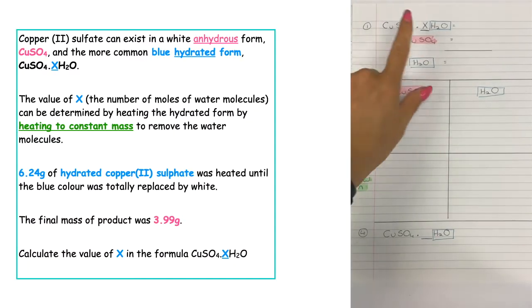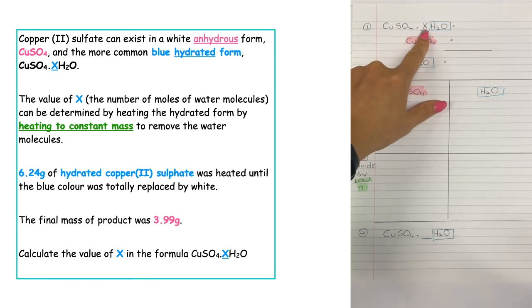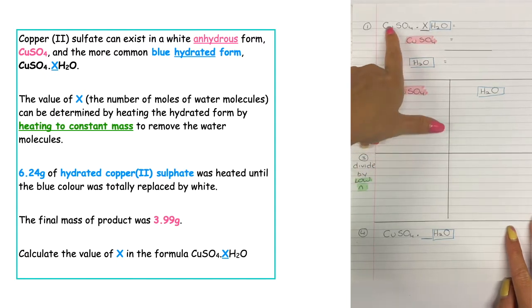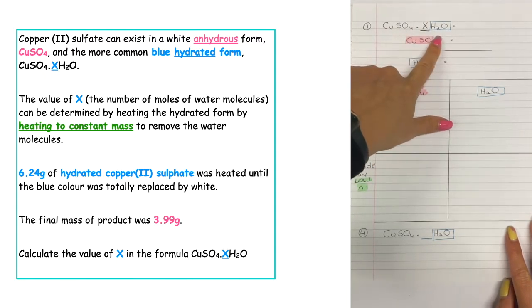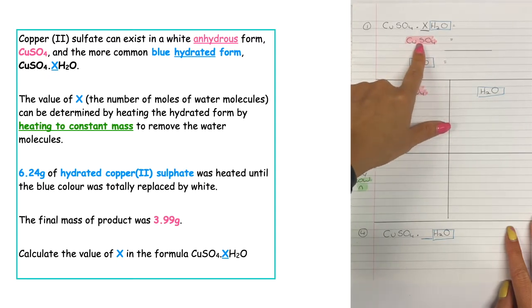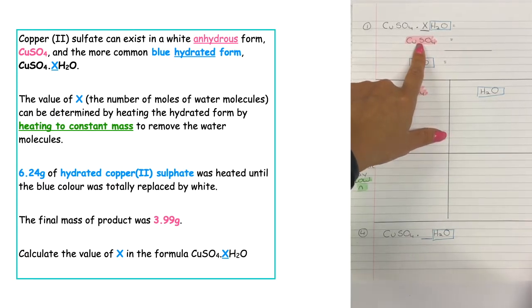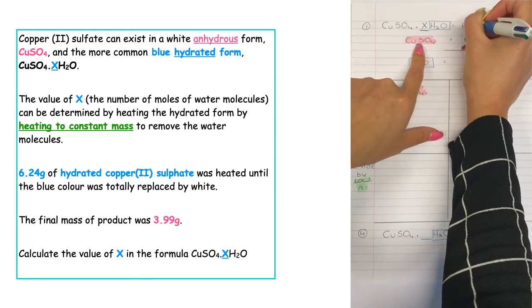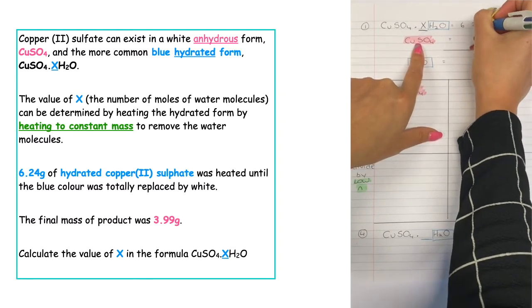In this question we want to solve for x, meaning we're wanting to calculate the number of moles of water which are attached to the copper sulphate in the hydrated version of the copper 2 sulphate molecule. To do this we use a technique of dehydration by heating to constant mass, removing the water molecules to leave the dehydrated copper 2 sulphate. In the question we were given our original mass of copper 2 sulphate as 6.24 grams.